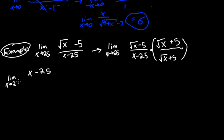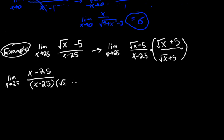So we have x minus 25 in the numerator — that's what it should be. On the bottom, we're just going to keep x minus 25 times the square root of x plus 5, and we aren't going to multiply any of that out, because that doesn't suit our purposes. We have x minus 25 in both the numerator and denominator, so those can be crossed out.